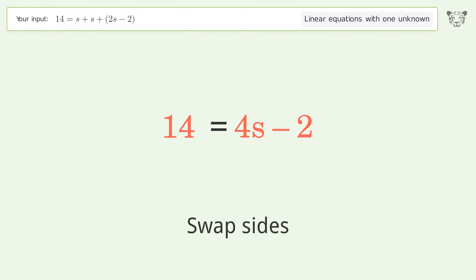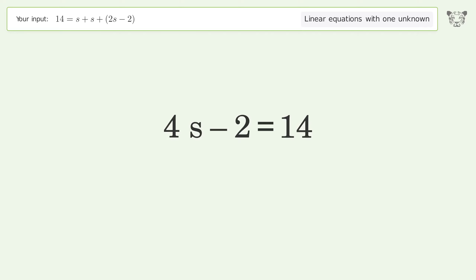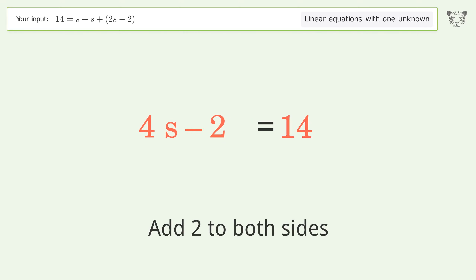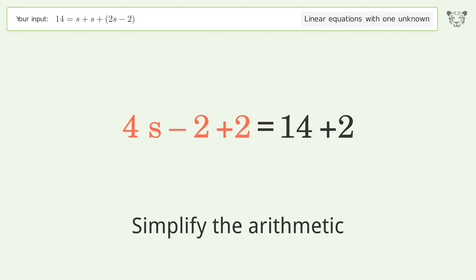Swap sides. Group all constants on the right side of the equation — add two to both sides. Simplify the arithmetic.